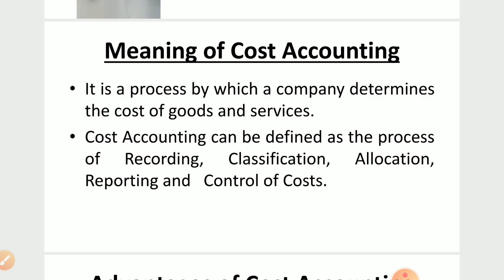Wages will be given, electricity bill will come. So every unit under it, the overall total expense has a certain amount of capital — that is what cost means. Cost accounting is basically a process — this process includes classification, allocation, reporting, and control.